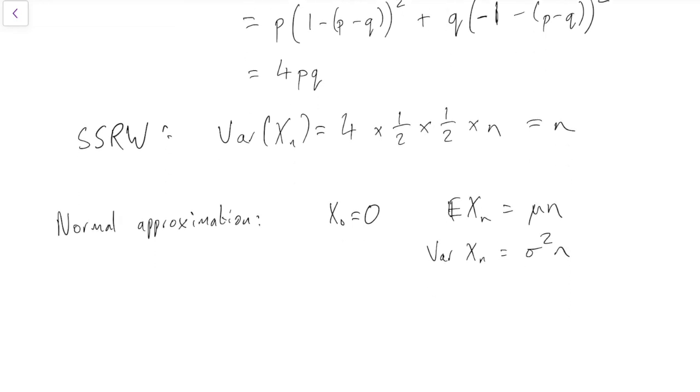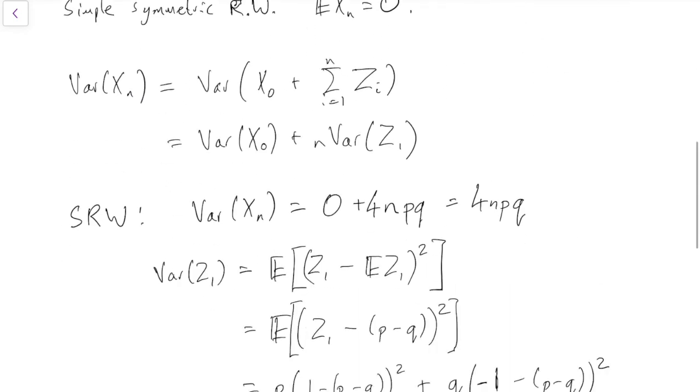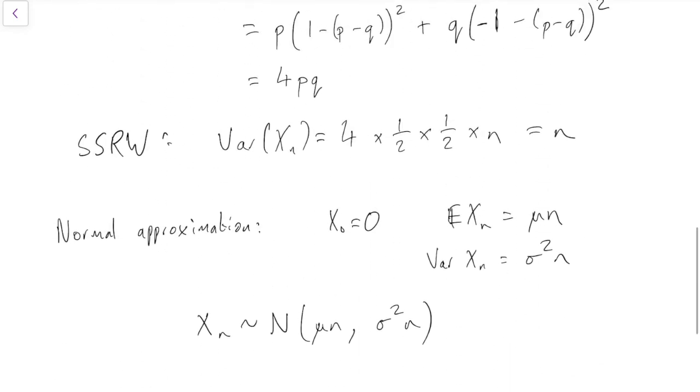Then you have your old normal approximation, which is that Xn is approximately normally distributed with mean μn and variance σ²n. That can just sometimes be a useful fact if you want to know roughly what the distribution of your random walk is at time n, and you can't be bothered to work it out exactly. You can just use a normal approximation based on these calculations of what the expectation and the variance are, and if n is big enough, that's normally a decent approximation.